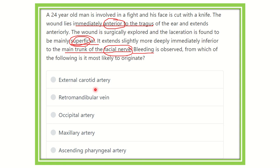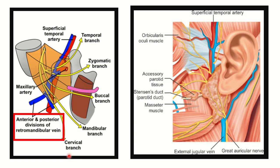The options are: external carotid artery, retromandibular vein, occipital artery, maxillary artery, and ascending pharyngeal artery. Let's look at the anatomical pictures — in this picture we can see a vein and an artery in relation to the relevant structures.